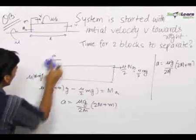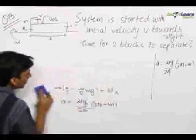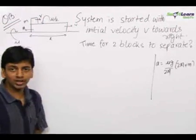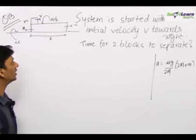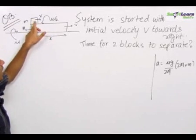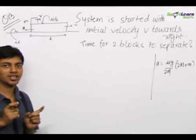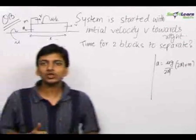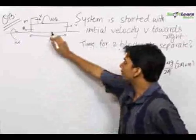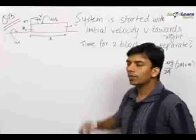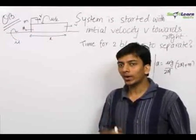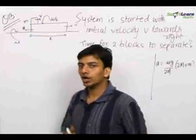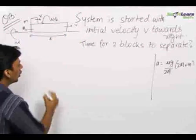Now we need to find the time taken by the two blocks to separate. Solving in the ground frame would be very difficult because both blocks are moving and we don't know the exact displacement the upper block must cover to leave the lower block. So it is best to solve this question in the reference frame of the lower block. Since the lower block is an accelerating frame, we must apply a pseudo force on the upper block to use Newton's law in that frame.